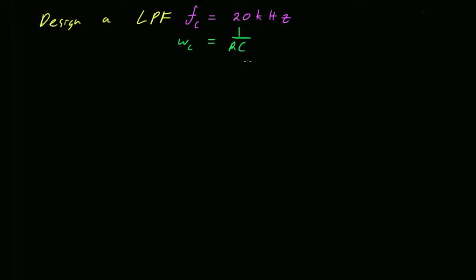This kills undergrads at every university every year: getting omega and hertz mixed up. If you go to lab and your cutoff frequency is off by a mysterious factor of 6—which is about 2π—it probably means you calculated a cutoff frequency in radians per second but you're measuring it in hertz. You've got to mind your 2π's. I want a cutoff frequency of 20 kilohertz, which really means omega cutoff equals 2π times 20k, which is 40π k radians per second, and that equals 1 over RC.